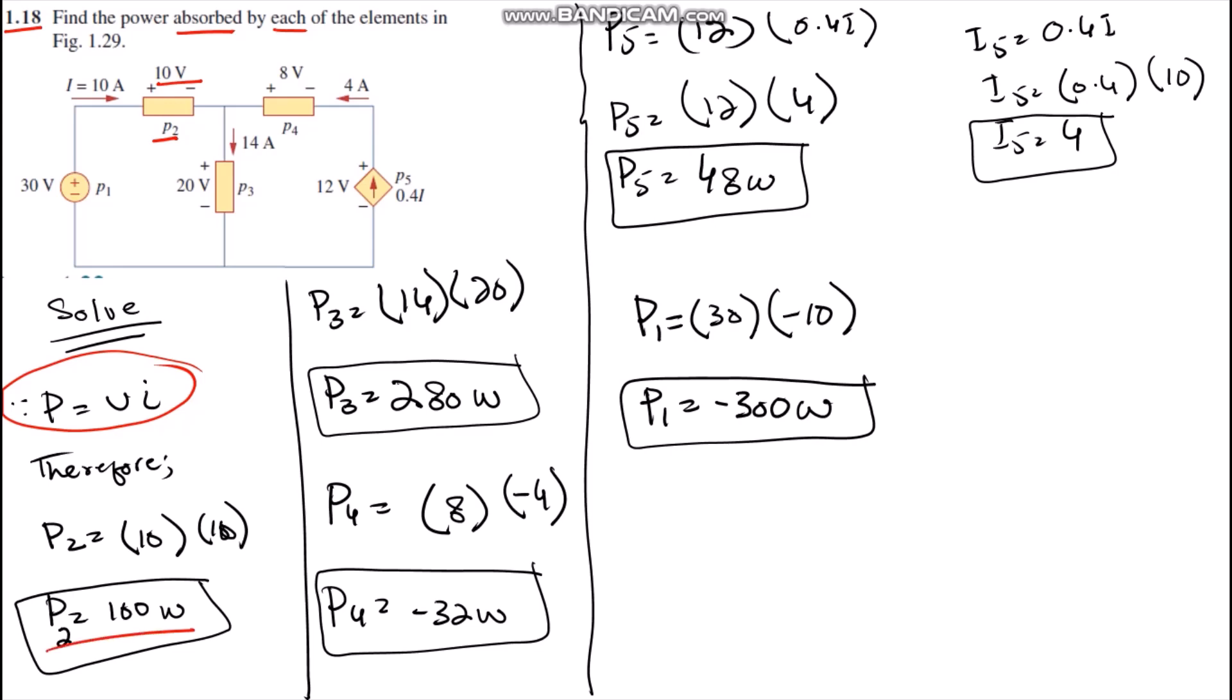P3 equals 14 multiplied by 20. P3 has 20 volts and 14 amperes entering it. Both are positive, therefore we get 280 watts.